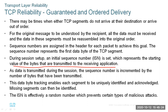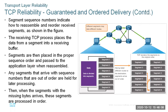As data is transmitted during the session, the sequence number is incremented by the number of bytes that have been transmitted. This data byte tracking enables each segment to be uniquely identified and acknowledged, so missing segments can be identified. The initial sequence number is effectively a random number, which prevents certain types of malicious attacks and avoids malicious segments being injected into the transmission.